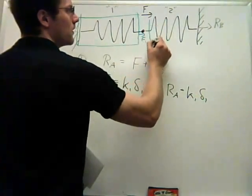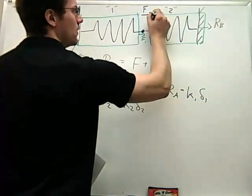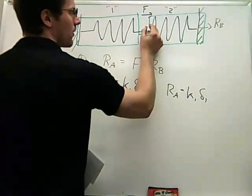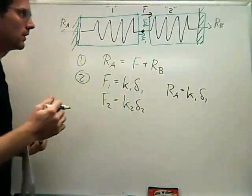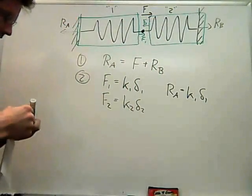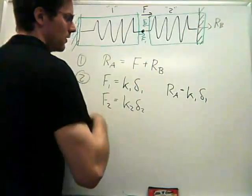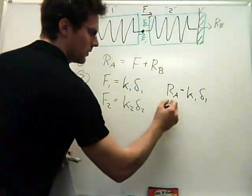And I can make a similar argument about the second spring. So if I had this spring right here and I asked what is F2, the amount that I'm pulling this spring—well F2, you can see, is RB. So I'll replace F2 with RB.